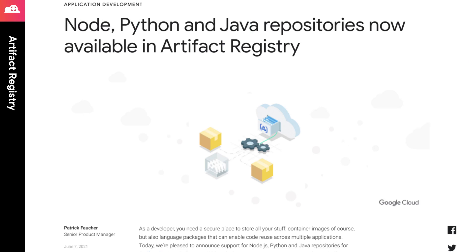Google Cloud's Artifact Registry is a next-generation container registry. Last month, Google announced that in addition to containers, they are offering support for other types of artifacts in preview. This includes Java packages for Maven, Node.js packages for NPM, and Python packages for PyPI. If you're creating reusable artifacts for your organization using any of these, you can integrate this private artifact store into your build process. You can even store your artifacts in the regions where you're deploying to reduce latency.